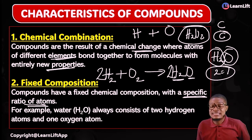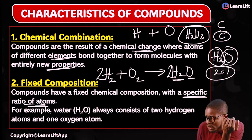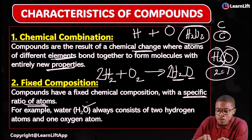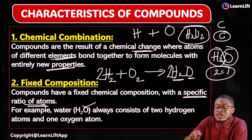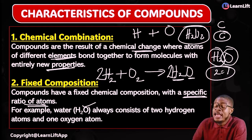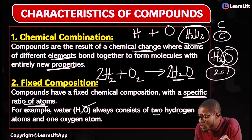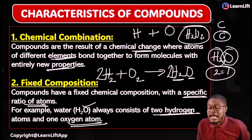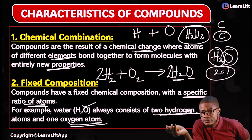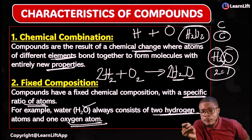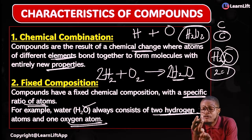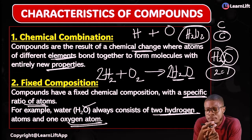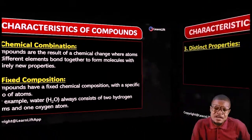That's why we say compounds have fixed composition — a specific ratio must be followed. For example, water — whether in America, Ghana, Uganda, or Nigeria — will always contain 2 hydrogen atoms and 1 oxygen atom. That's why it is called fixed composition. Number 1 characteristic of a compound is chemical combination. Number 2 is fixed composition.